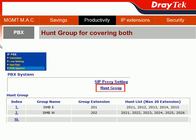The next feature is the hunt group. It provides a better way to handle incoming calls — you can have incoming calls ring simultaneously or sequentially, or route to a specific extension you assign. For hunt group configuration, go to the IPvX section, choose PBX System, and then find Hunt Group.